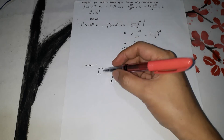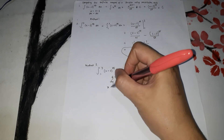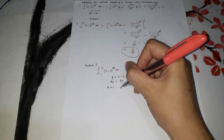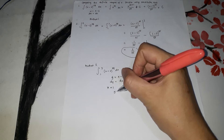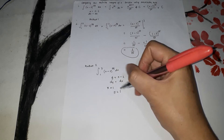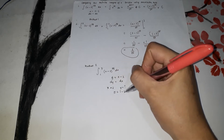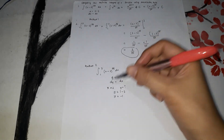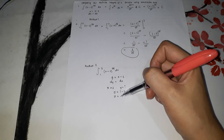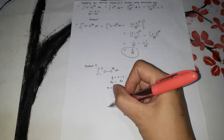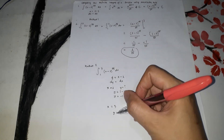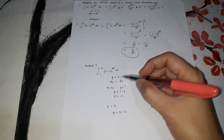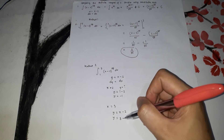Next, we convert the limits. For the lower limit x = 1: y = x minus 2 = 1 minus 2, so y = negative 1. For the upper limit x = 3: y = 3 minus 2, so y = positive 1. The new limits are negative 1 to positive 1.